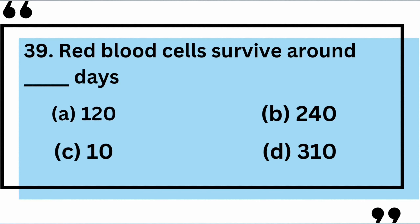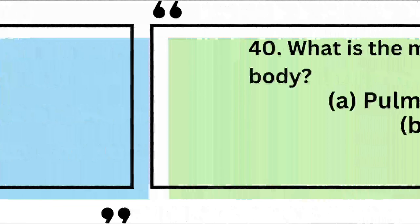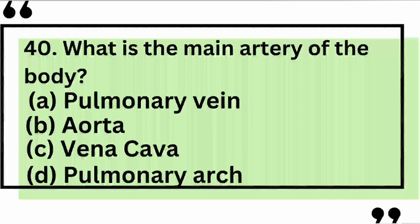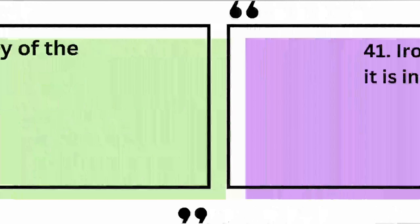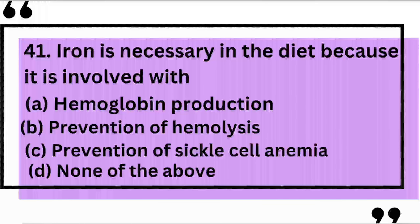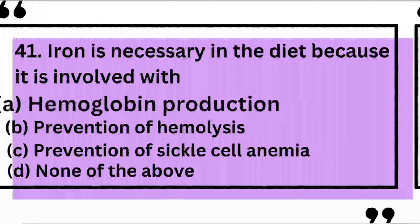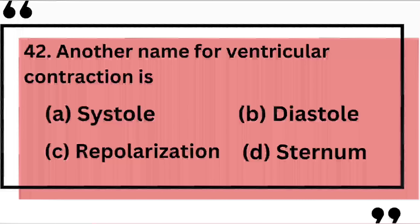Red blood cells survive around how many days? Yes, the correct answer is A: 120. What is the main artery of the body? Yes, the correct answer is B: aorta. Iron is necessary in the diet because it is involved with — yes, the correct answer is A: hemoglobin production. Another name for ventricular contraction is — the correct answer is A: systole.